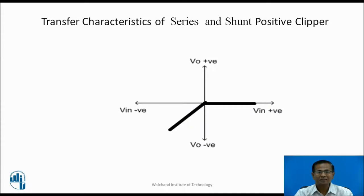Transfer characteristics of shunt positive clipper: During positive half cycle, Vin is positive but the voltage across the load is zero. During negative half cycle, as Vin changes, V0 changes accordingly, so the transfer characteristics is as shown.